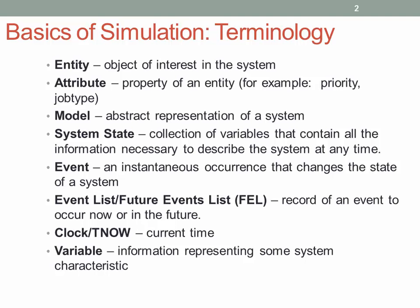An event is an instantaneous occurrence that changes the state of the system. Going back to the same example — if you have an oven that is idle and an entity or part arrives to the oven, automatically the state of the oven changes to being busy. That's what causes the change in state — what we call an event. The arrival of that part into the oven is the event that causes the change in the state of the system.